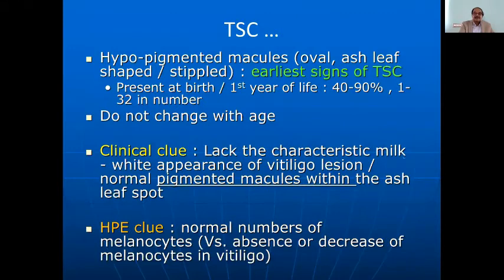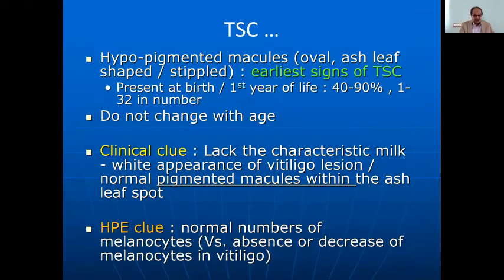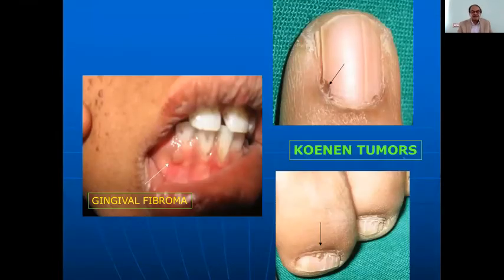The earliest signs of tuberous sclerosis are hypopigmented macules. You should be very careful if a child presents with seizures. The ash-leaf macules lack the characteristic milky-white appearance of vitiligo lesions and have normal pigmented macules within them.